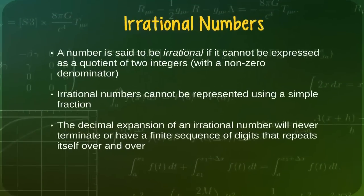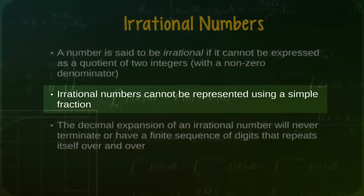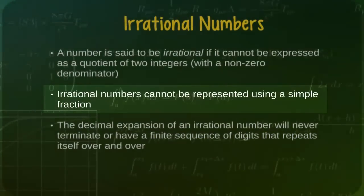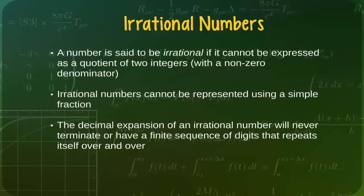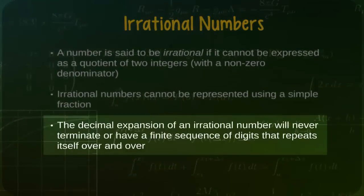Broadly speaking, an irrational number is any number that cannot be expressed as a quotient of two integers where the denominator is not equal to zero. It is therefore not possible to represent an irrational number using a simple fraction. Furthermore, unlike with a rational number, the decimal expansion of an irrational number will never terminate or have a finite sequence of digits that repeats itself over and over.